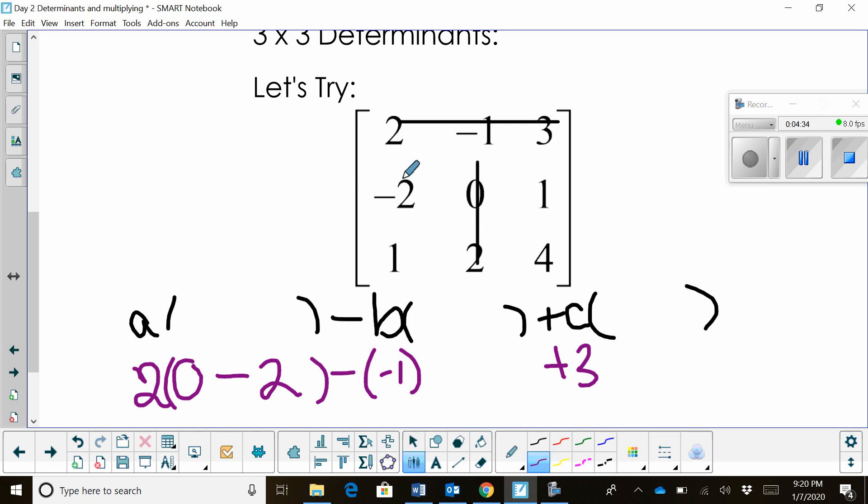And so I'm left with the 2 by 2, which is negative 2, 1, 1, 4. So let's multiply negative 8. And then the other product is minus, in this case, 1. Let me bring it down here. So negative 8 minus 1. That's my second determinant.